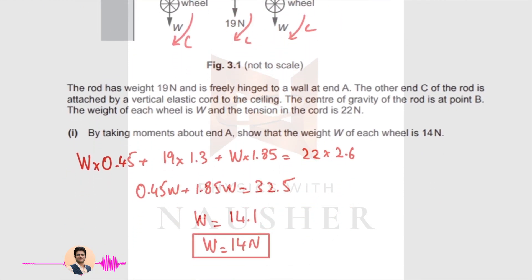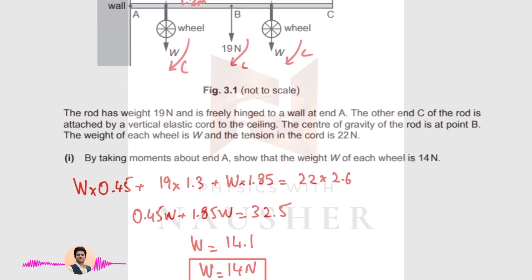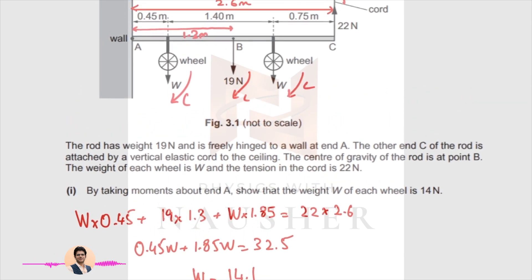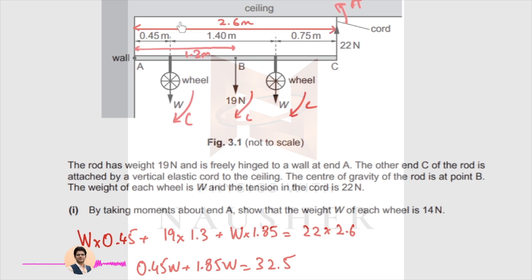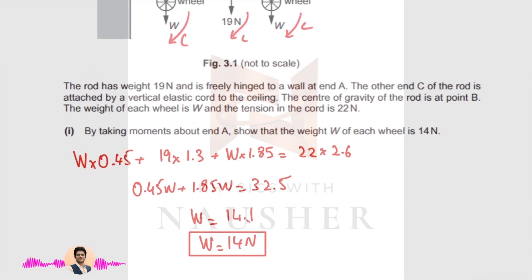Looking at the equation: W × 0.45 plus 19 × 1.3 plus W × 1.85 equals 22 × 2.6. Solving this, the value of W you get is 14.1 Newtons — exactly 14 Newtons.